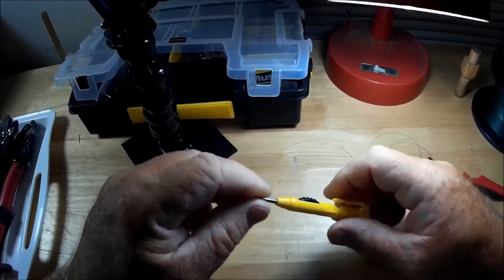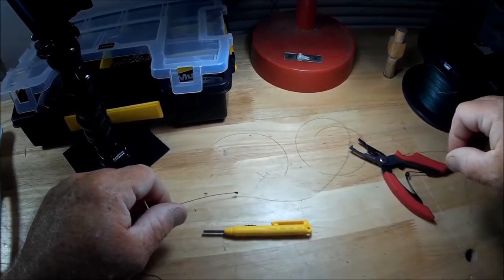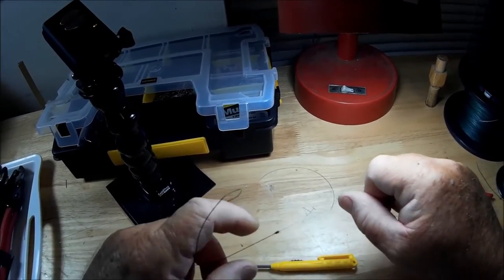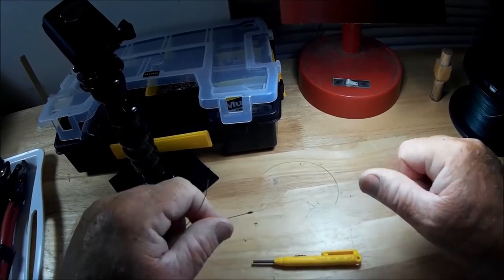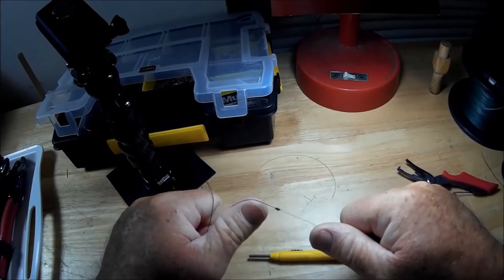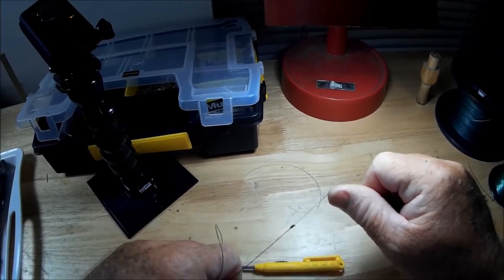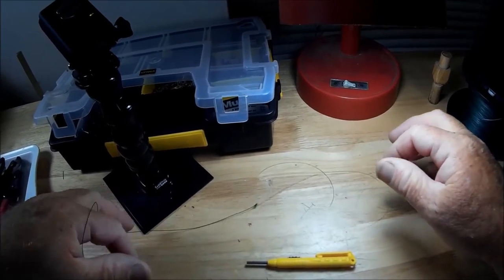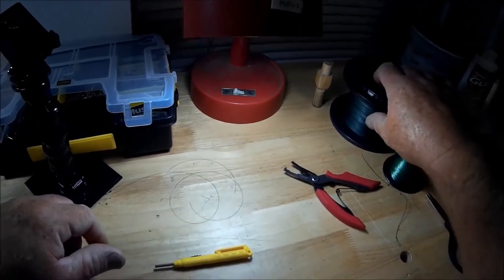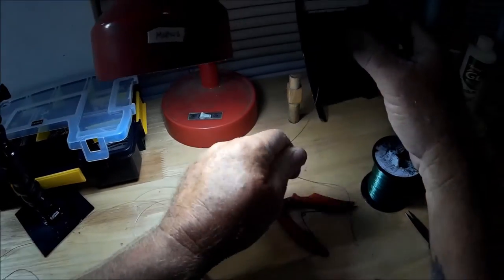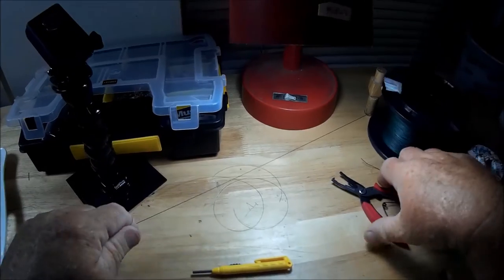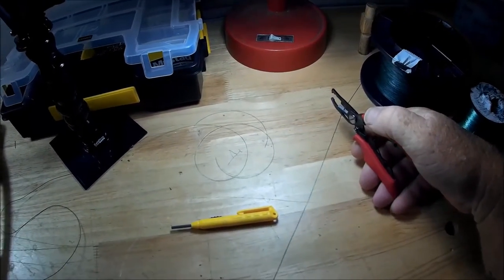And it is a quick way of making a mono or braid to mono leader. This is actually 65 pound Power Pro to a 20 pound leader. I've tried it with everything, 65 pound Power Pro to say 40 pound mono. I can do that too.